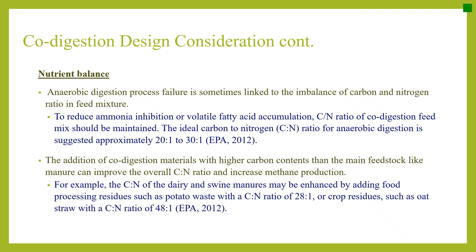Nutrient balance is another key consideration. Anaerobic digestion process failure is sometimes linked to an imbalance of carbon to nitrogen ratio in the feed mixture. To reduce ammonia inhibition or volatile fatty acid accumulation, the C:N ratio of the codigestion feed mix should be maintained. The ideal C:N ratio for anaerobic digestion is approximately 20:1 to 30:1. For example, the C:N ratio of dairy and swine manures may be enhanced by adding food processing residues such as poultry converter waste with a C:N ratio of 20:1, or crop residues such as oat straw with a C:N ratio of 48:1.